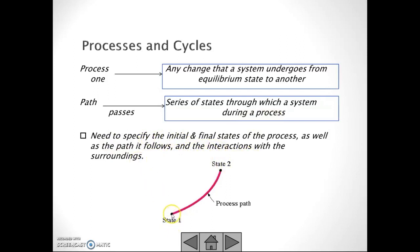For example, here we have state 1 and state 2. This is the process path from state 1 to state 2. We need to identify which is the initial and final states of the process.